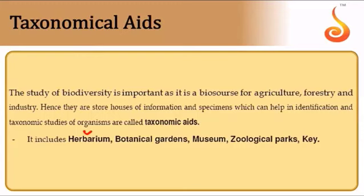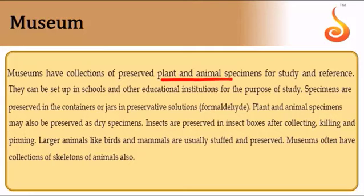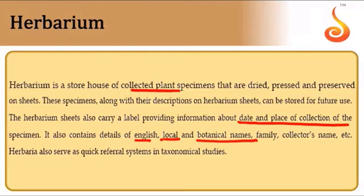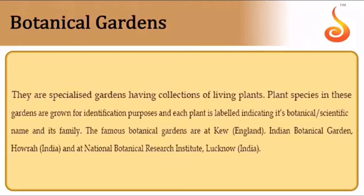Taxonomic aids include herbarium, botanical gardens, museums, zoological parks, and keys. Museums have preserved animal and plant specimens — preserved in formaldehyde, or as dry or stuffed specimens. Herbarium involves collecting plant specimens, drying and pressing them, sometimes treating with fungicides to prevent contamination, and preserving them on sheets with information about date and place of collection, vernacular name, English name, botanical name, and who collected it.